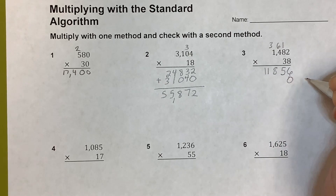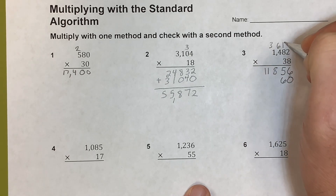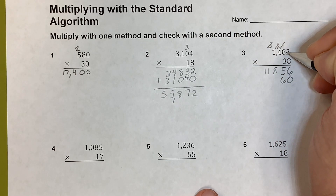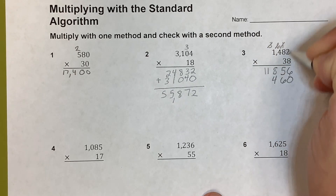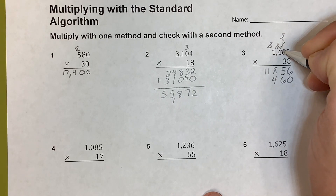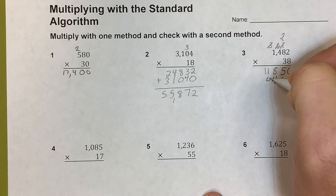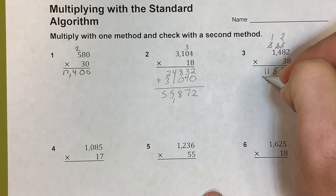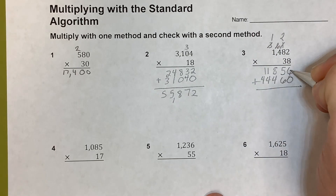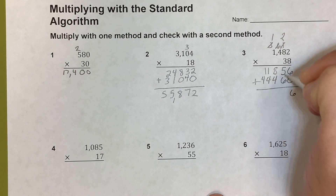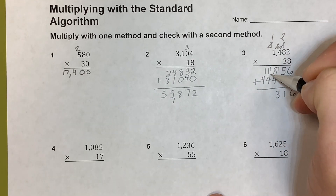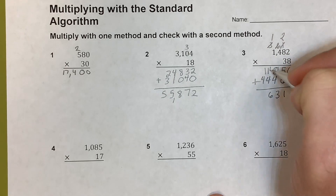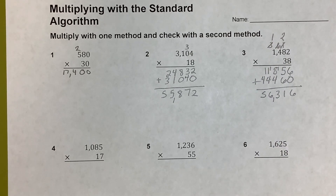Moving to the tens place, I add a 0. Then 3 times 2 is 6, 3 times 8 is 24, 3 times 4 is 12 plus 2 is 14, 3 times 1 is 3 plus 1 is 4. Adding: 6 plus 0 is 6, 5 plus 6 is 11 carry 1, 9 plus 4 is 13, 4 plus 1 plus 1 is 6, 5 plus 6 is 11 — so the answer is 56,316.